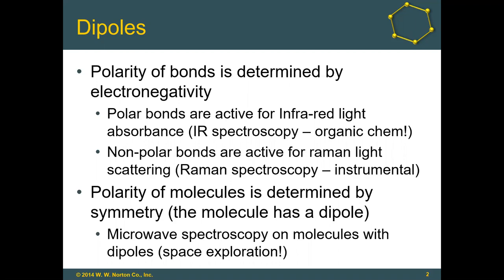Nonpolar bonds don't absorb infrared light very well, but they do scatter what's called Raman light. This is useful in a technique called Raman spectroscopy, which you can learn more about in advanced analytical chemistry. The polarity of molecules themselves is determined by the symmetry of the molecule and the polarity of the bonds. If a molecule is polar, it has a dipole, and molecules with dipoles absorb microwaves very well — making microwave spectroscopy useful in space exploration and at home.